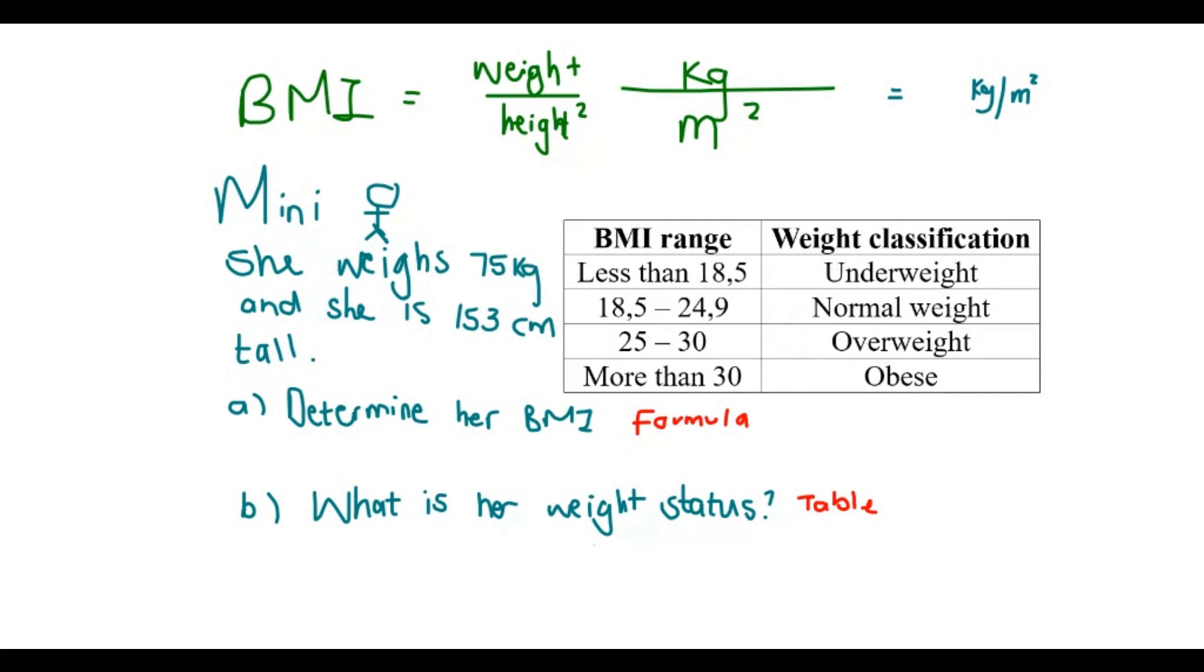So, for the first question, we use the formula. Determine her BMI, we use the formula. And for the second question, we use the table. Because you want to see which one of these, where does she fit in? So, let's go. For the first one, if I use the formula for BMI, we have her weight, which is 75 kg. And then at the bottom, we need the meters. We need a height. But her height was given to us in centimeters. So, I need to convert that first to meters. And I do that by dividing it by 100. So, 153 centimeters divide by 100 gives you 1.53.